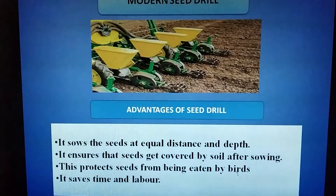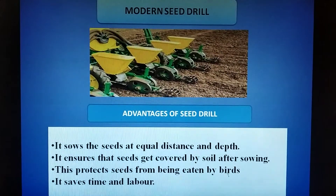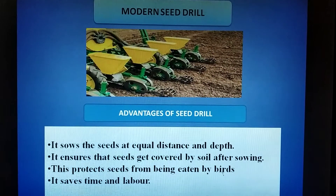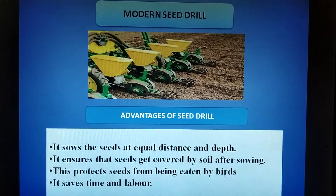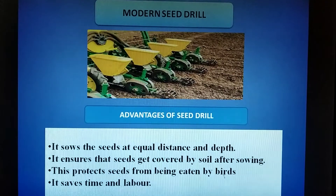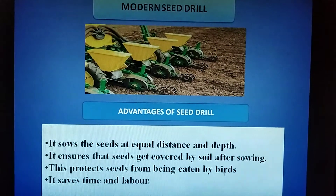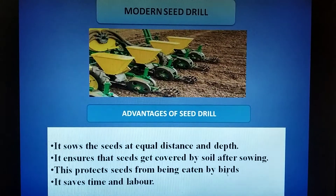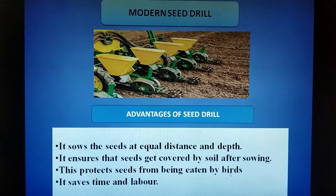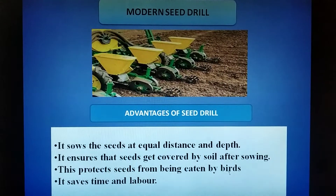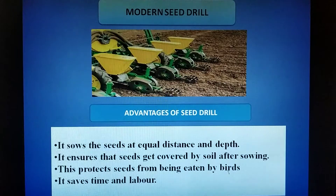The advantages of the seed drill are: it sows seeds at the proper depth and appropriate distance; it ensures the seeds are covered with soil after sowing; and it also prevents damage from birds. The appropriate distance between seeds is very important to avoid overcrowding of plants. When too many plants grow together, there is competition for nutrients, water, and sunlight, so seeds must be sown at appropriate distances.